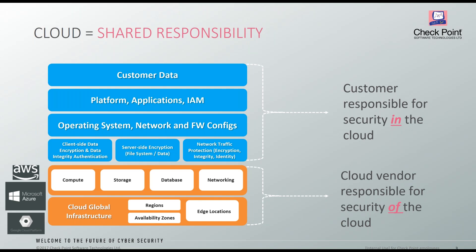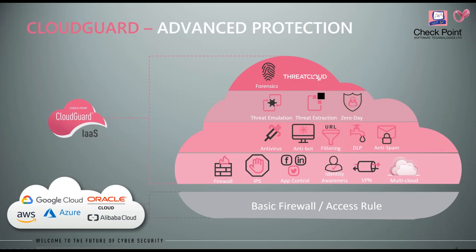Aquí viene el tema de cómo nosotros, como Checkpoint, podemos ayudar a nuestros clientes a proteger esa nube. Si bien es cierto que la nube ya tiene ciertos controles, los controles son los más básicos. Lo único que se tiene a nivel de red es un firewall stateful, solamente basado en orígenes, destinos, puertos y acciones. Básicamente, decido si de un origen a un destino, por ejemplo un puerto 80, permito o deniego. Sin embargo, sobre lo que ya permití, ya no se hace nada más.